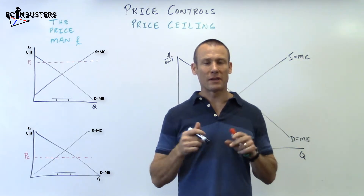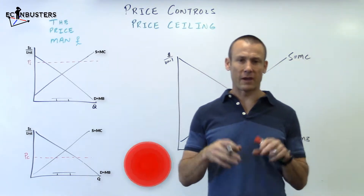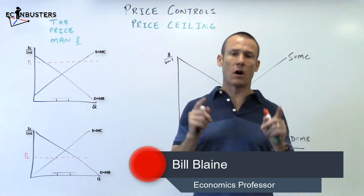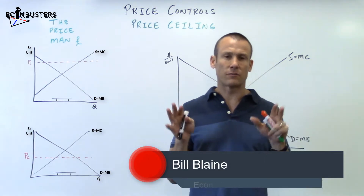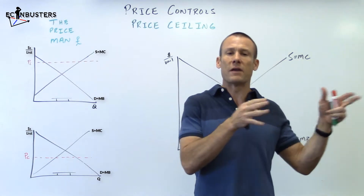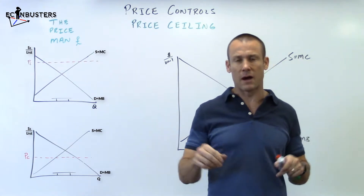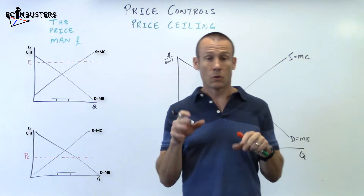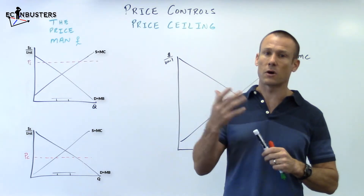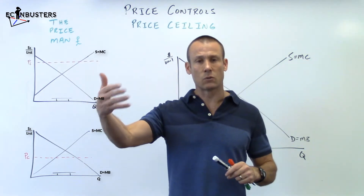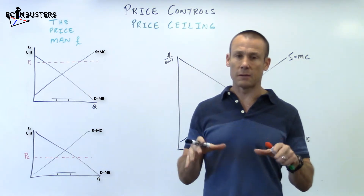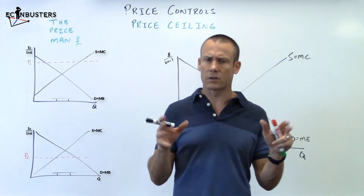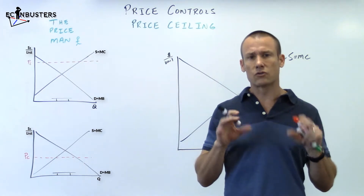Welcome to Price Controls. We're going to control the price — and oftentimes it's the government doing that. So this actually falls under a government intervention type of section. We know that when we don't control the price, the market has a nice way of finding the equilibrium price. But sometimes the government, sometimes for bad, sometimes for good reasons, they'll come in and control the price.